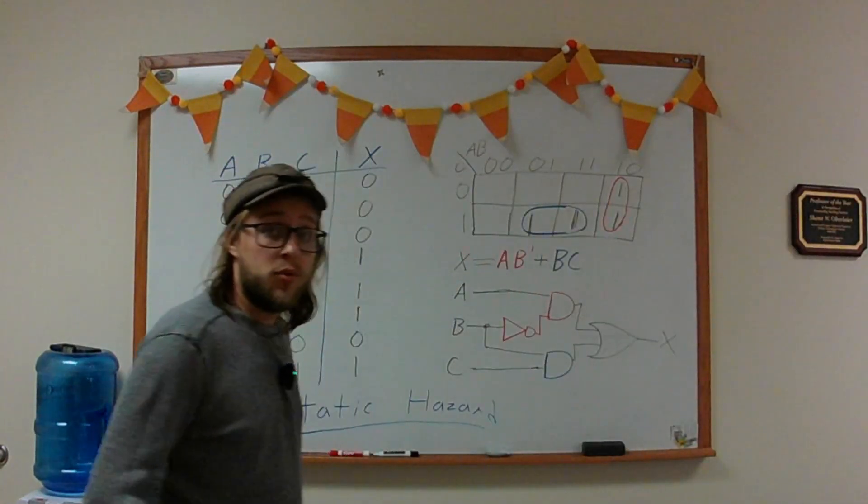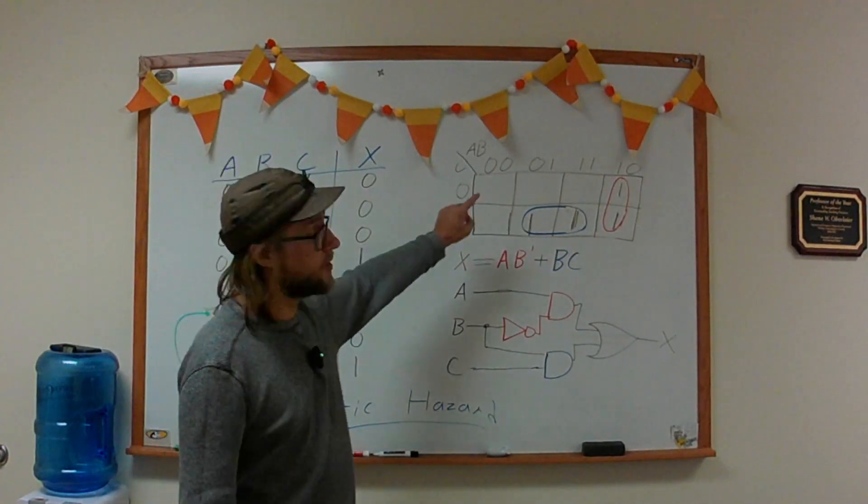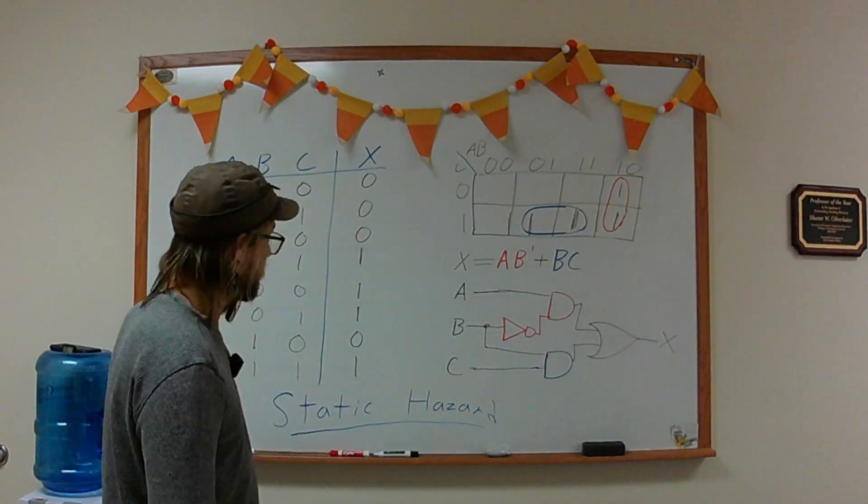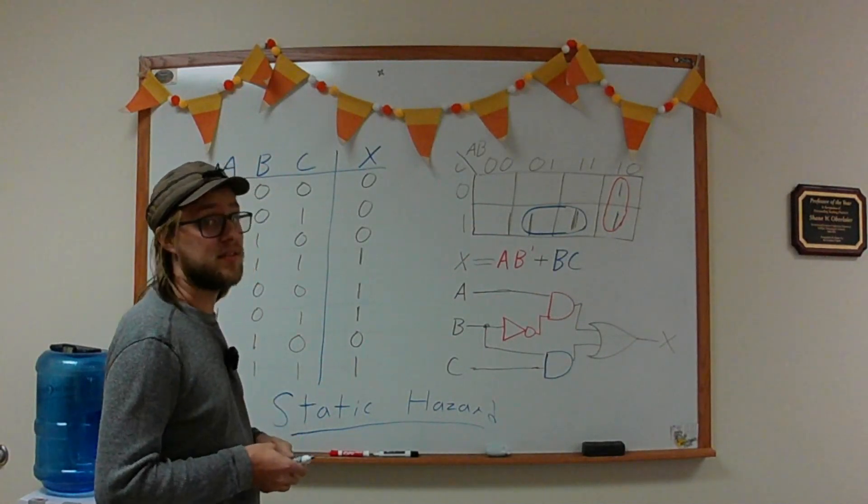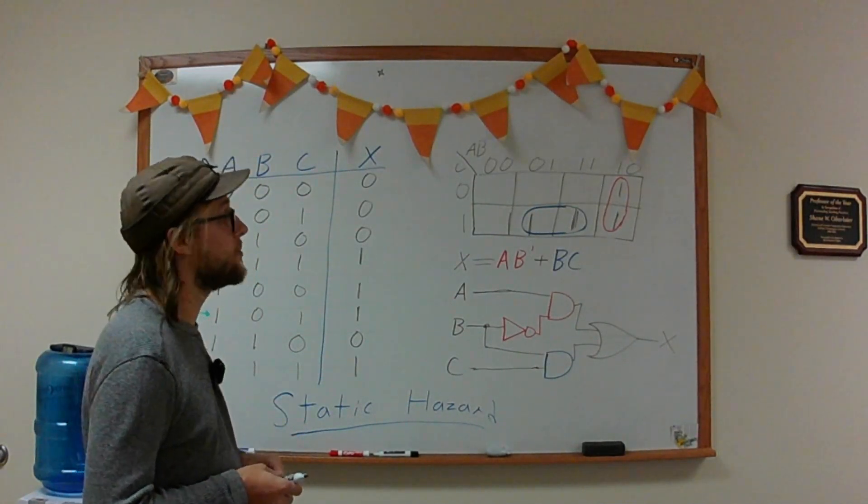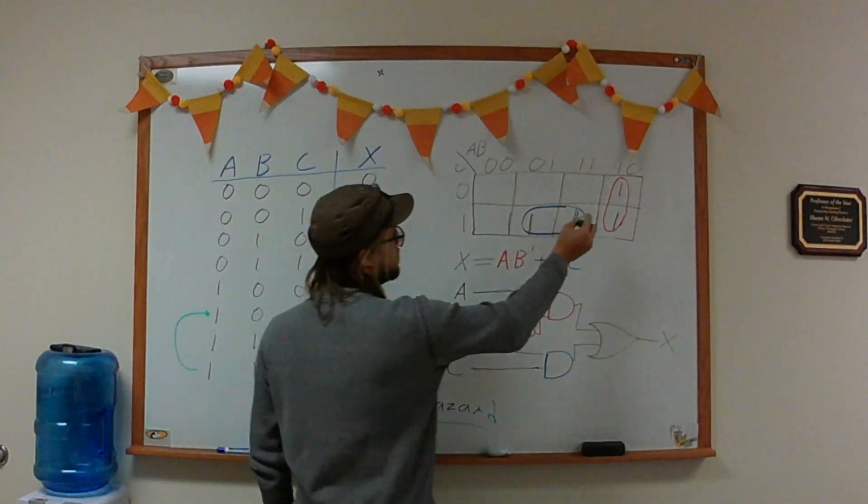Your best tool for finding static hazards is to look at your K-map. All you need to do is find any implicants that share an edge but don't overlap, which is right here.